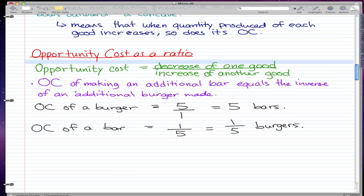Now you can see here that the inverse concept is true. So the opportunity cost of making an additional bar equals the inverse of an additional burger made because the inverse is pretty much taking numbers and flipping them over. And this is pretty elementary. So five would be five over one.